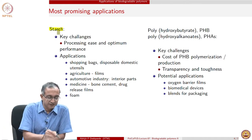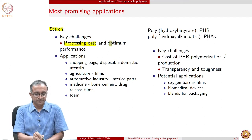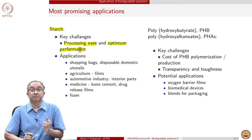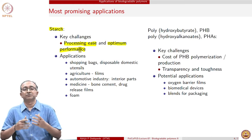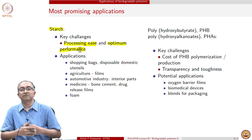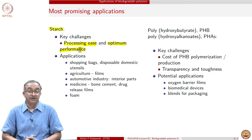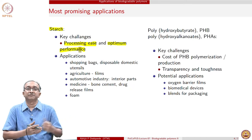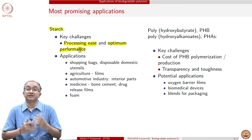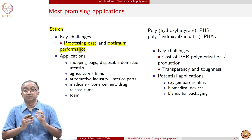If we look at starch-based materials, the key challenge here is processing and also optimum performance. Quite often starch film may be brittle, and for many film applications we want flexible transparent film. Can that be achieved using starch? And can film be made at the same rate that many polyethylene or polypropylene packaging films are currently made? Many of these questions have been addressed to a limited extent.